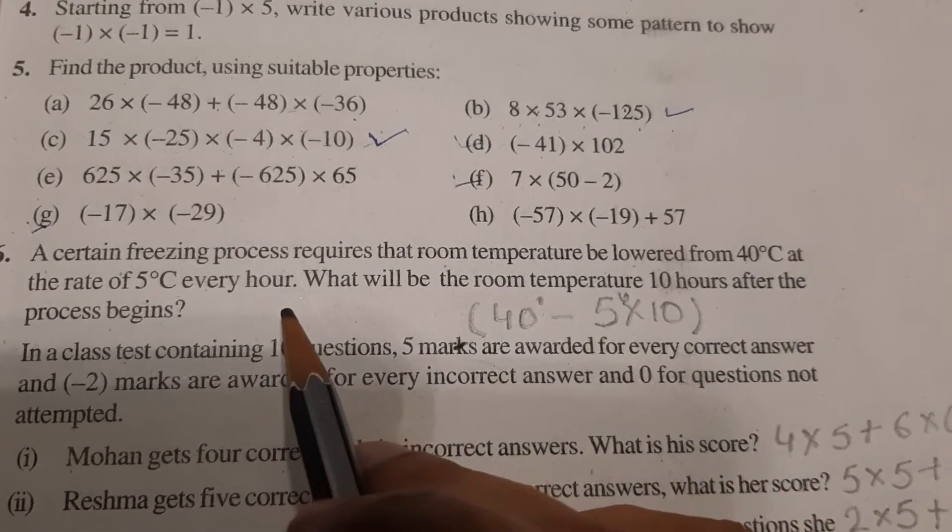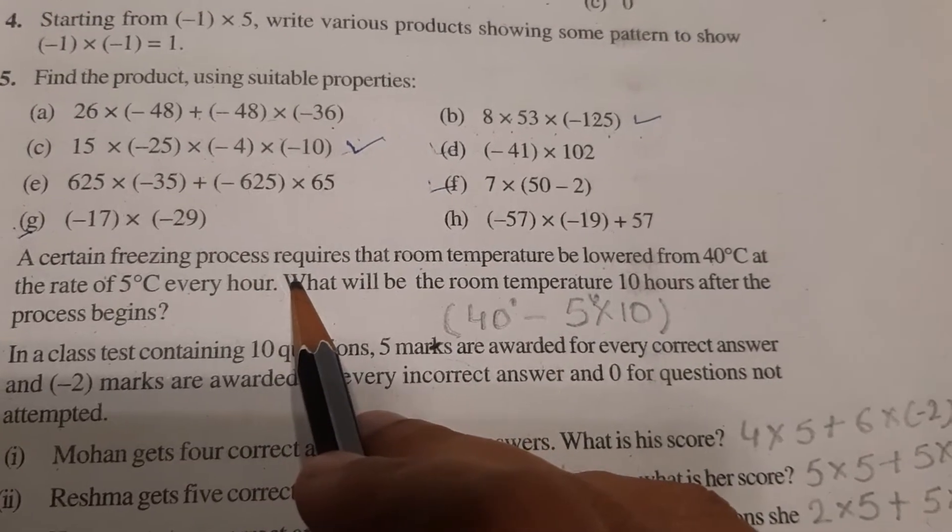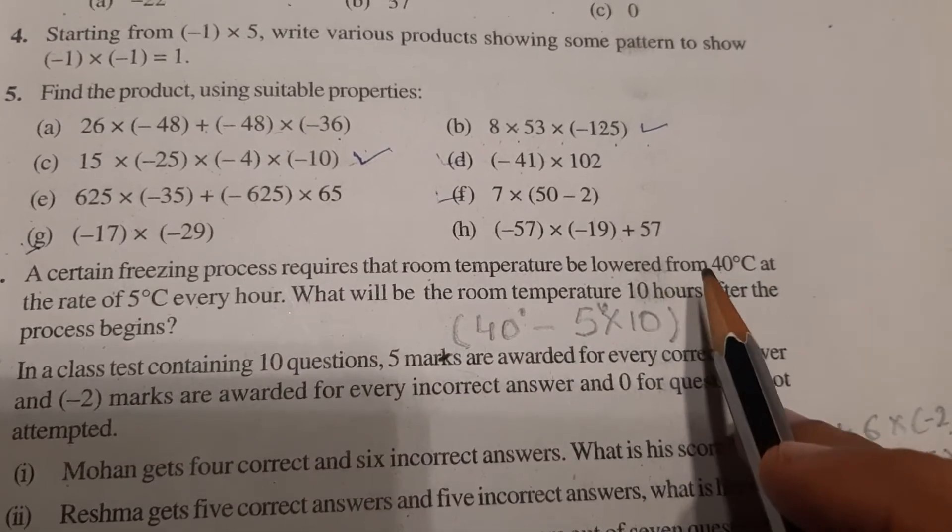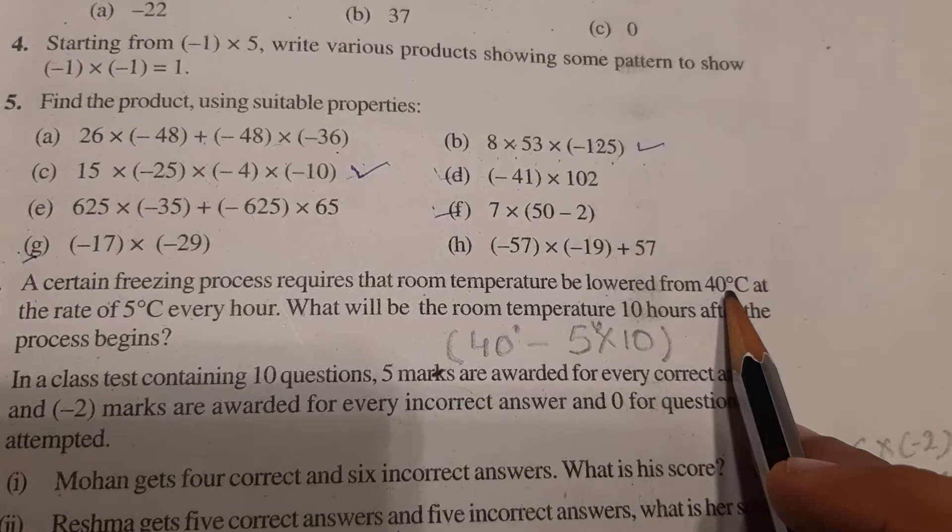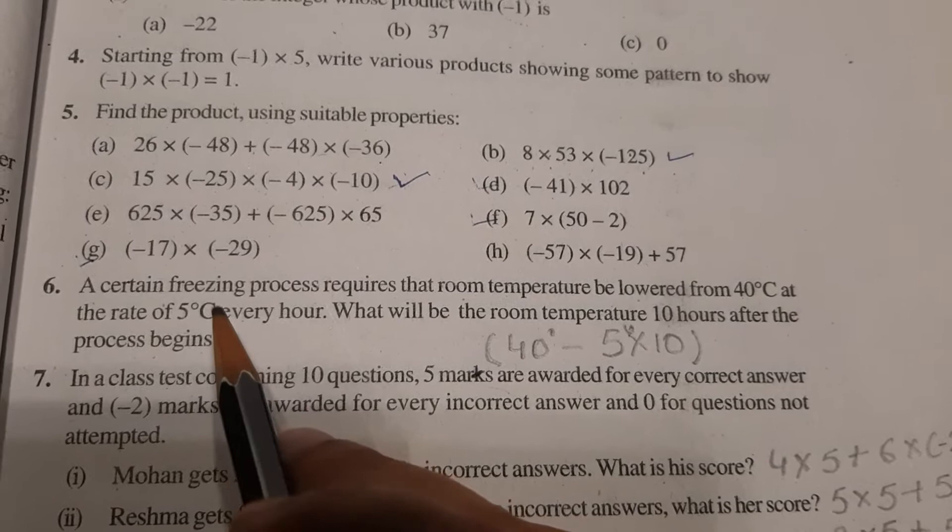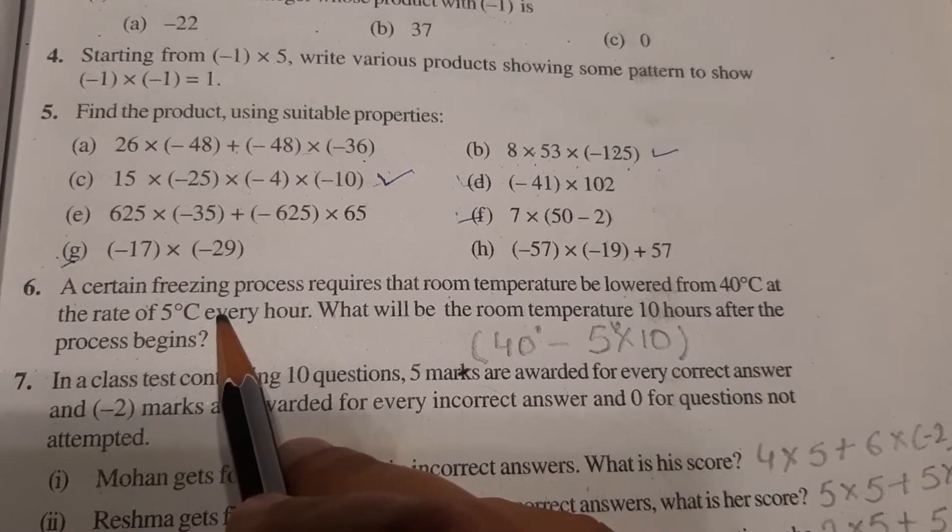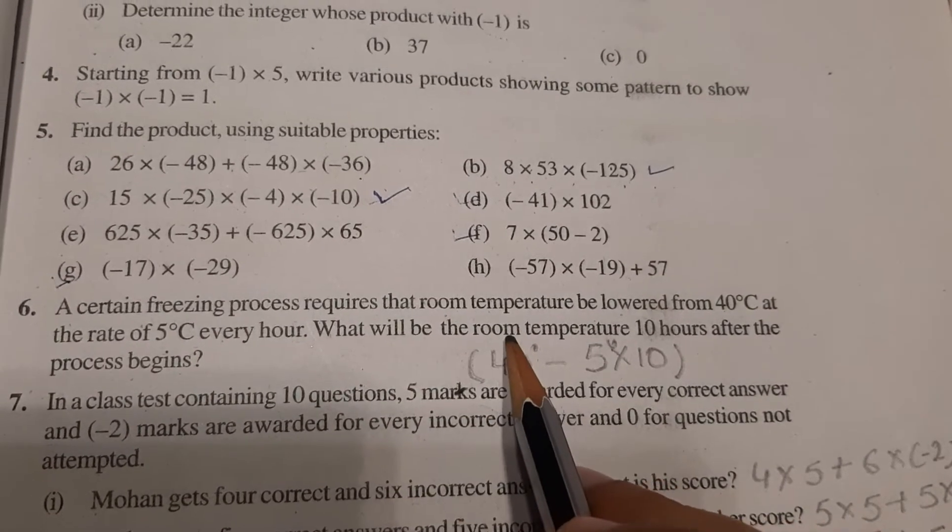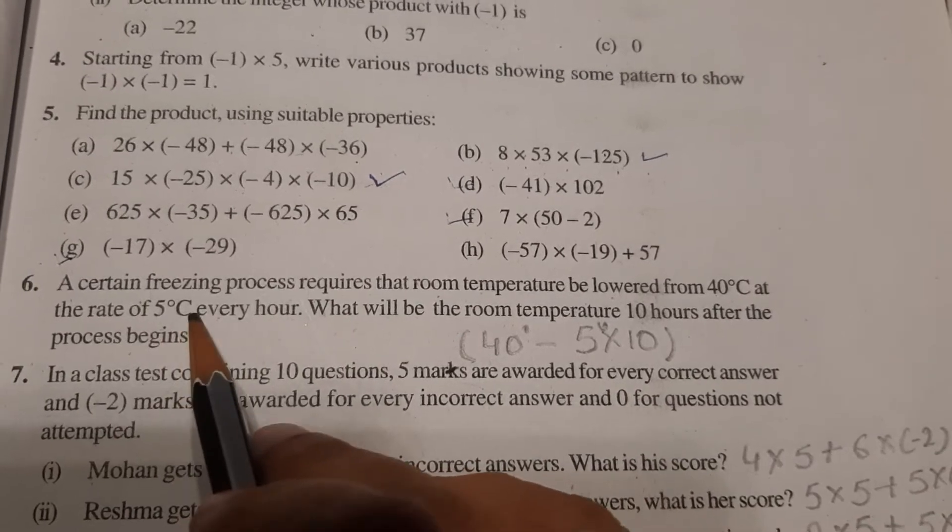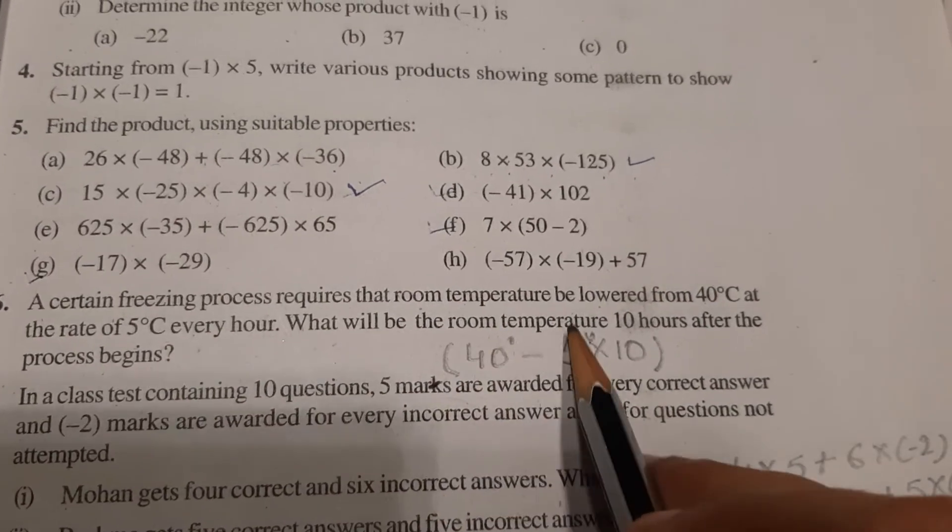Okay, so read this statement two or three times to understand it. You can see that our temperature is given as 40 degree Celsius at the beginning. After that, 5 degree Celsius temperature is being lowered after every hour. Now you have to calculate the room temperature after 10 hours.